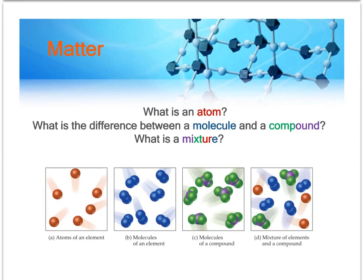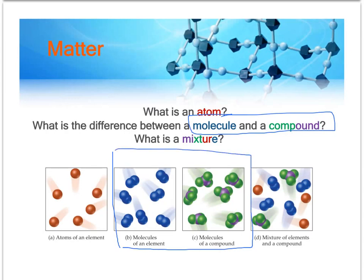So what are the definitions of an atom, molecule, compound and mixture? What might throw you off is the difference between a molecule and a compound. It's almost kind of a trivial difference, but it is different. So let's compare boxes B and C to get an idea of the difference between a molecule and a compound. What do you see is the difference there?